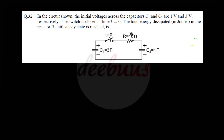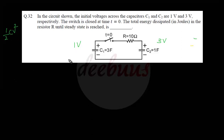Moving to the last question: in the circuit shown, initial voltages across capacitors C1 and C2 are 1 volt and 3 volts respectively. The switch is closed at t equals 0. We need to find the total energy dissipated in resistor R until steady state is reached. First, calculating the initial energy stored: U_initial equals (1/2)·C1·V1² plus (1/2)·C2·V2².